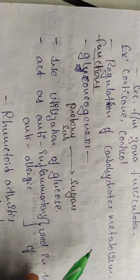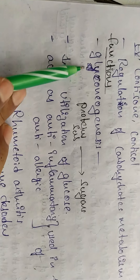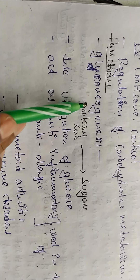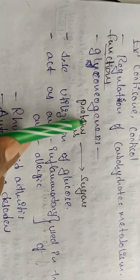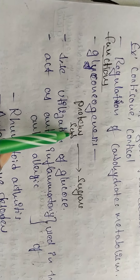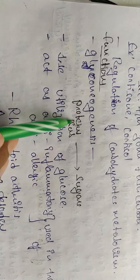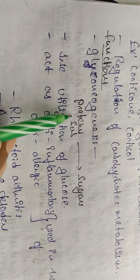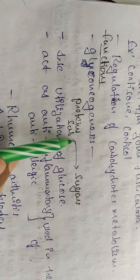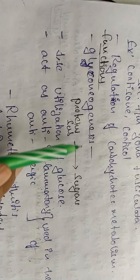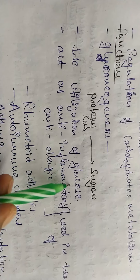The functions of glucocorticoids include gluconeogenesis — the process by which protein substances and other non-carbohydrate substances get converted into sugars. This process is called gluconeogenesis. Another function is that glucocorticoids decrease the utilization of glucose.